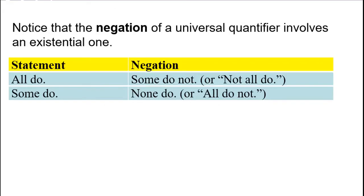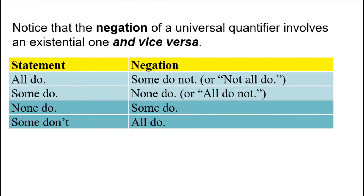Notice that when we found our negations, the negation of a universal quantifier involved an existential one. If I want to negate 'all do something,' I say 'some of them don't.' If I want to negate 'some do something,' I say 'none of them do,' and vice versa.